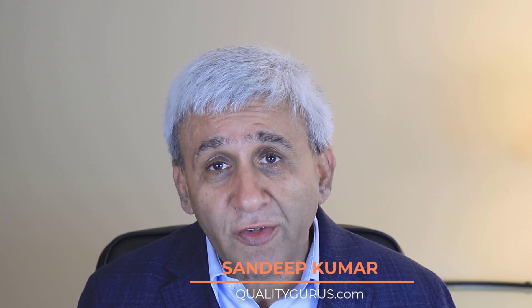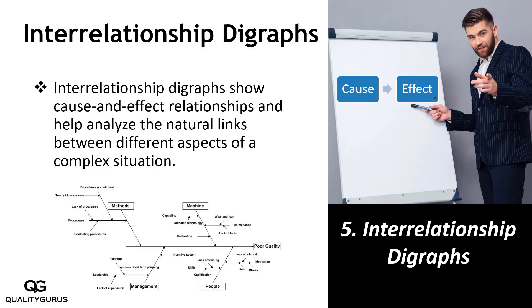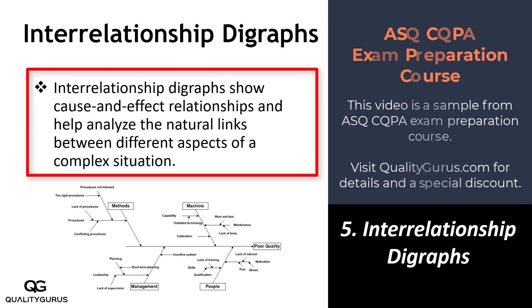Now coming to the fifth tool in this list of quality tools, which is interrelationship diagrams. Interrelationship diagrams show the cause and effect relationship and help analyze the natural link between different aspects of a complex situation.